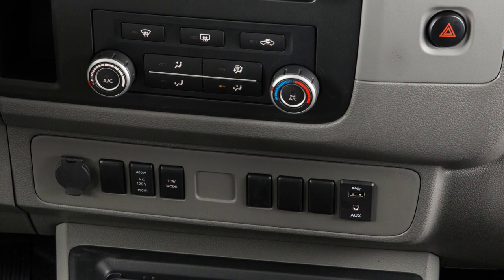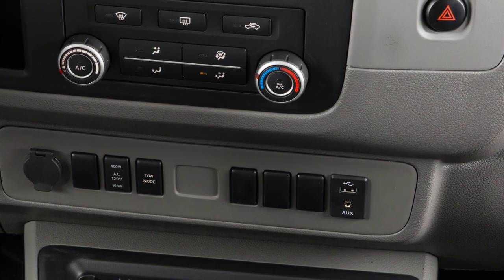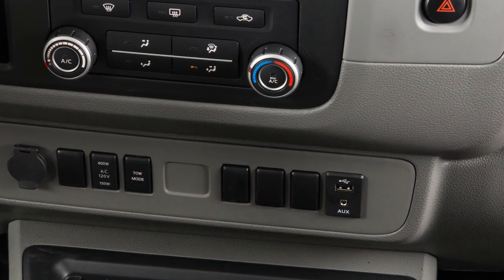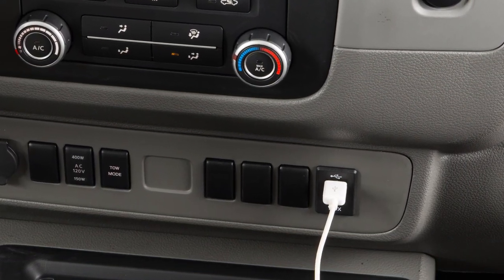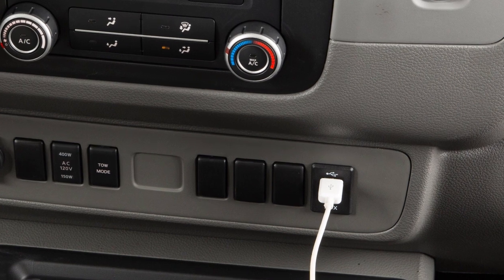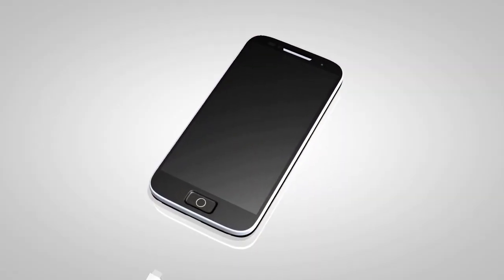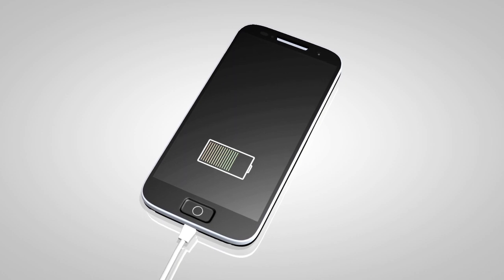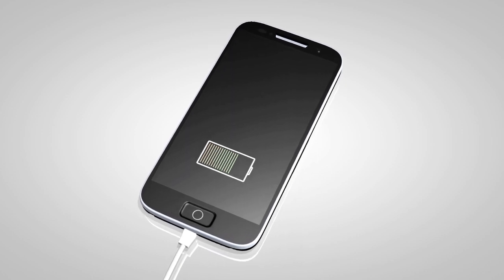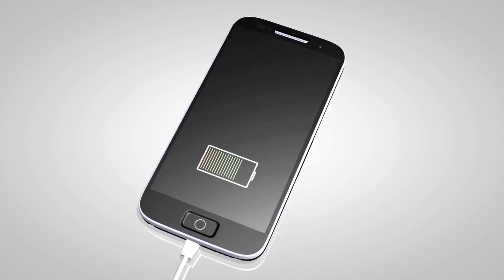To use an iPod with the audio system, connect the cable supplied with your iPod to the USB jack, then connect the other end of the cable to your iPod. If compatible, the battery of your iPod will charge while connected to the vehicle.